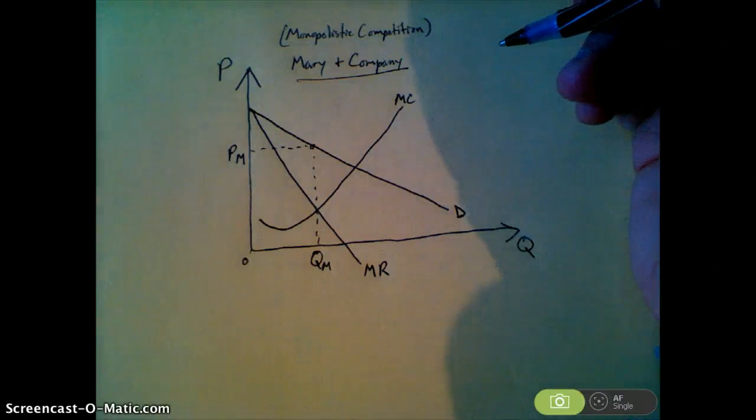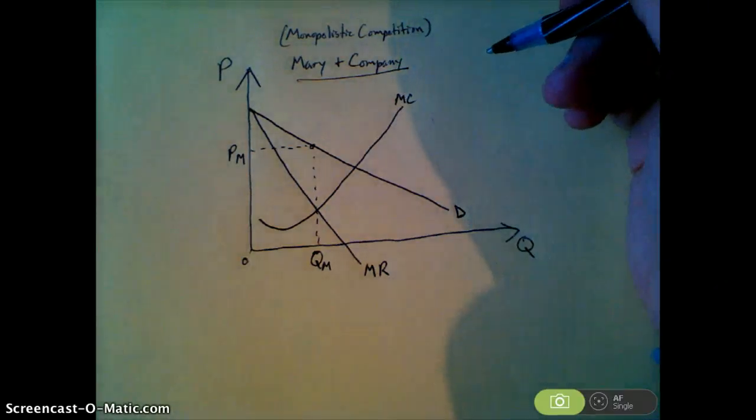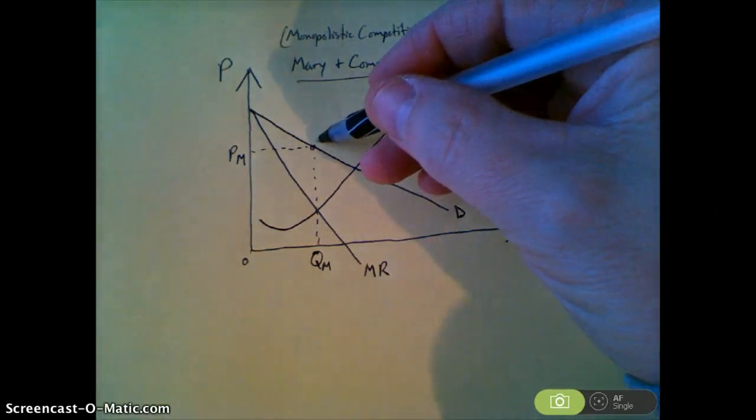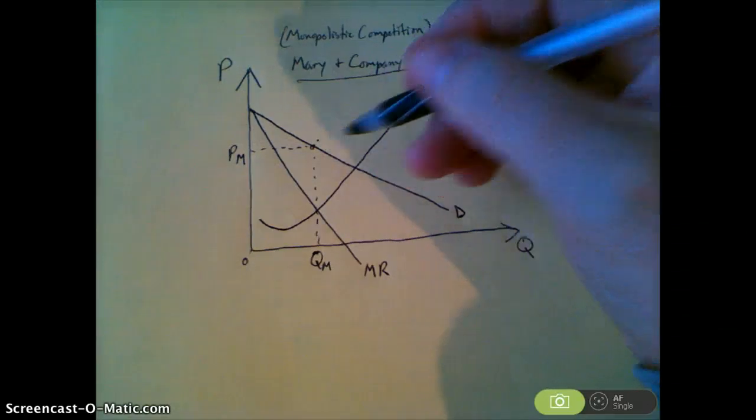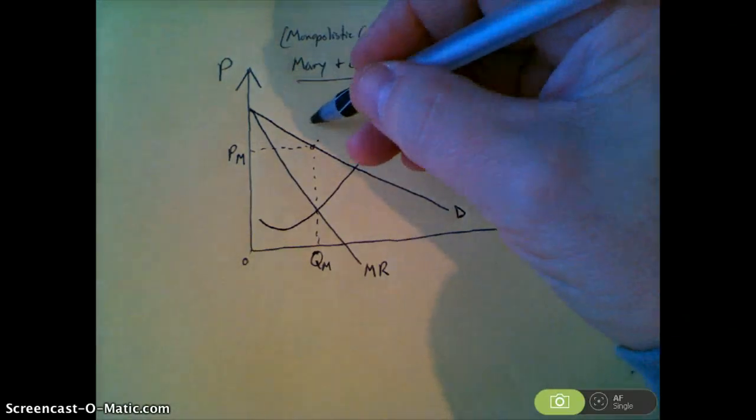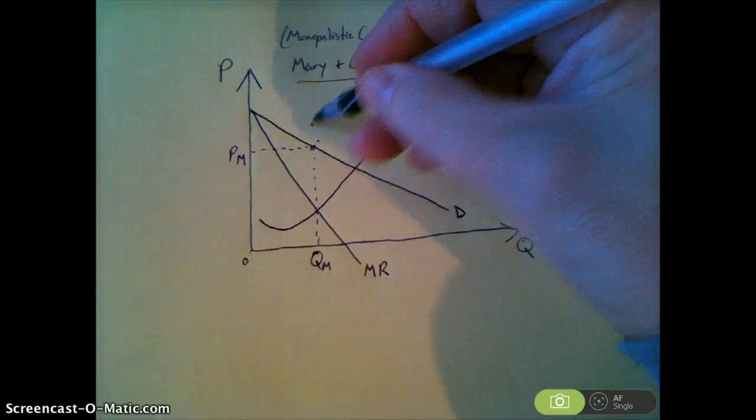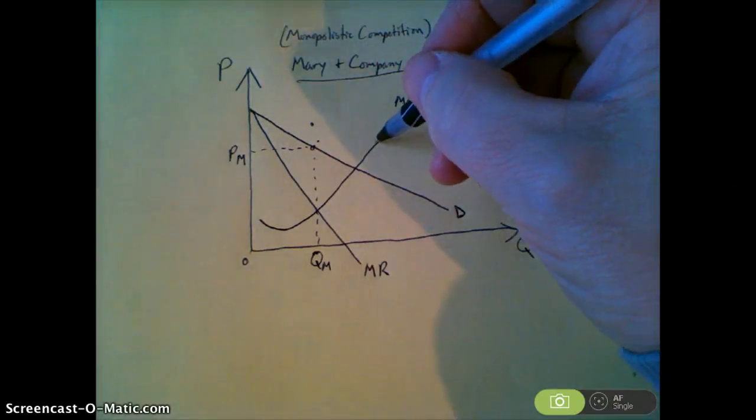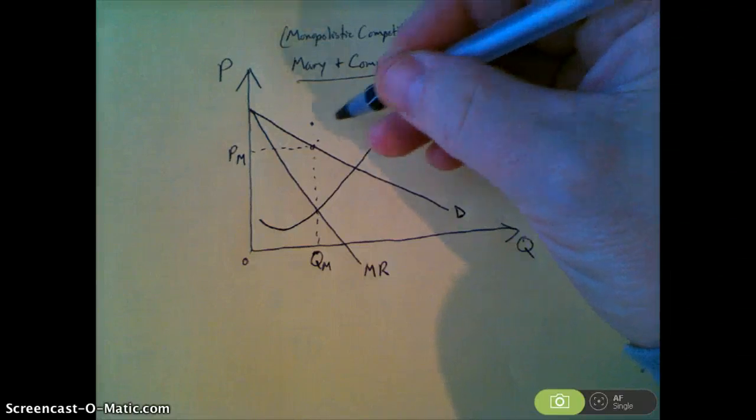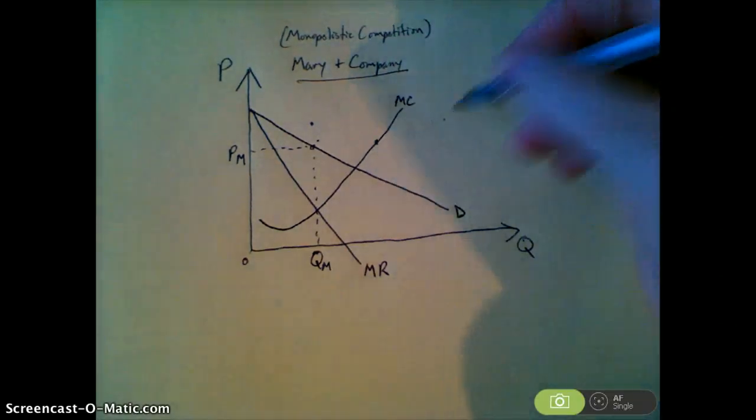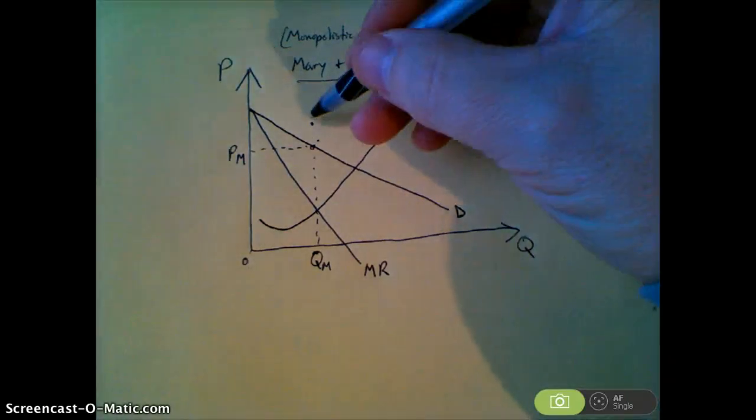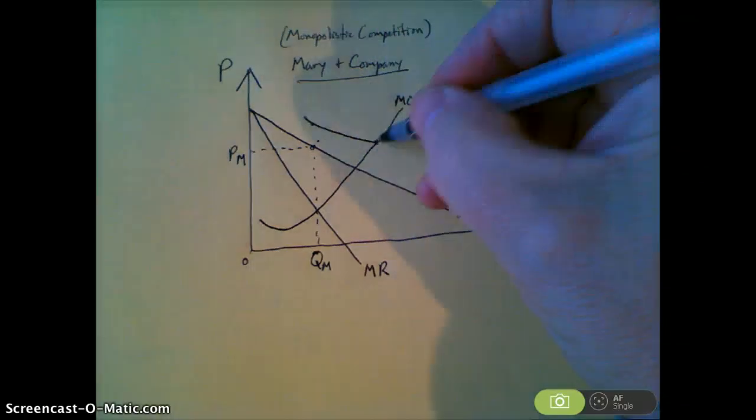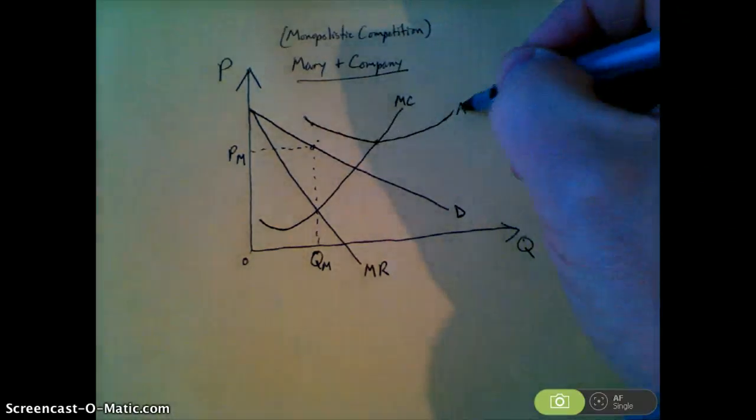All right, now we want to show that they are operating at a loss, and that would mean that the average total cost has to be greater than the price on the demand curve at QM. So I've got to make average total cost. I'll put like a little dot because I want it to be higher there, and then I want its low point to be somewhere here, and then I'm kind of making just little dots to give me a reference.